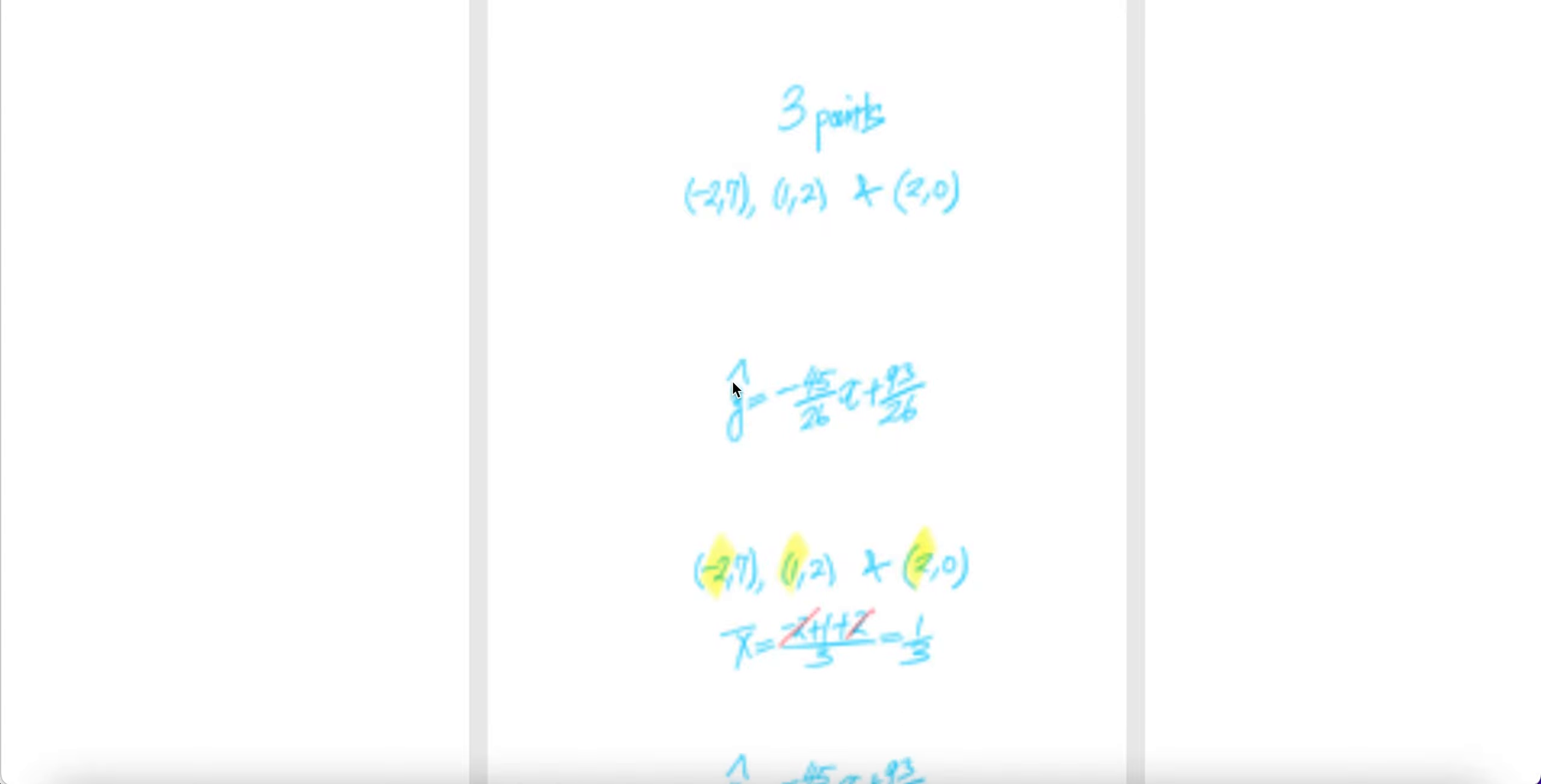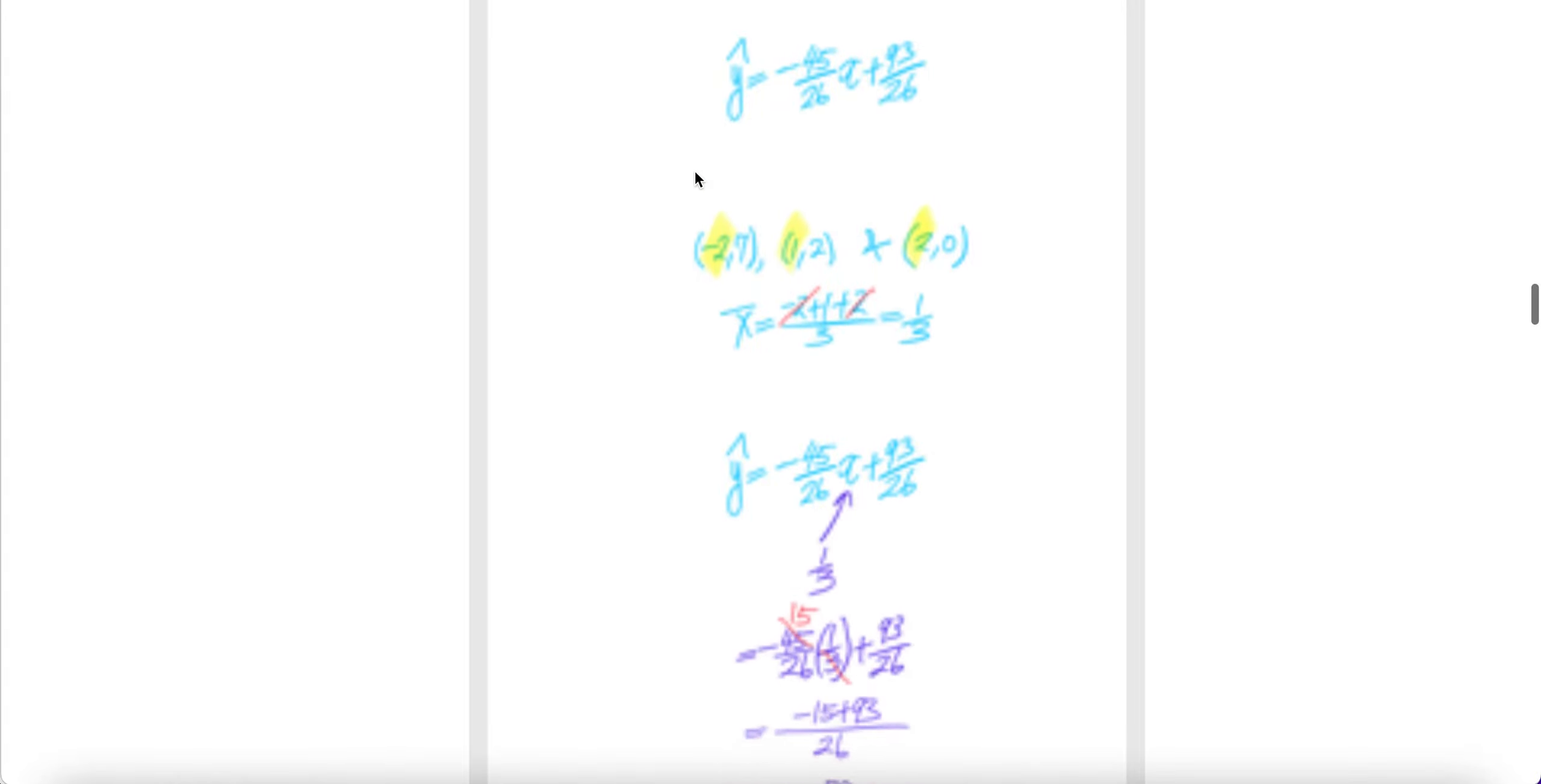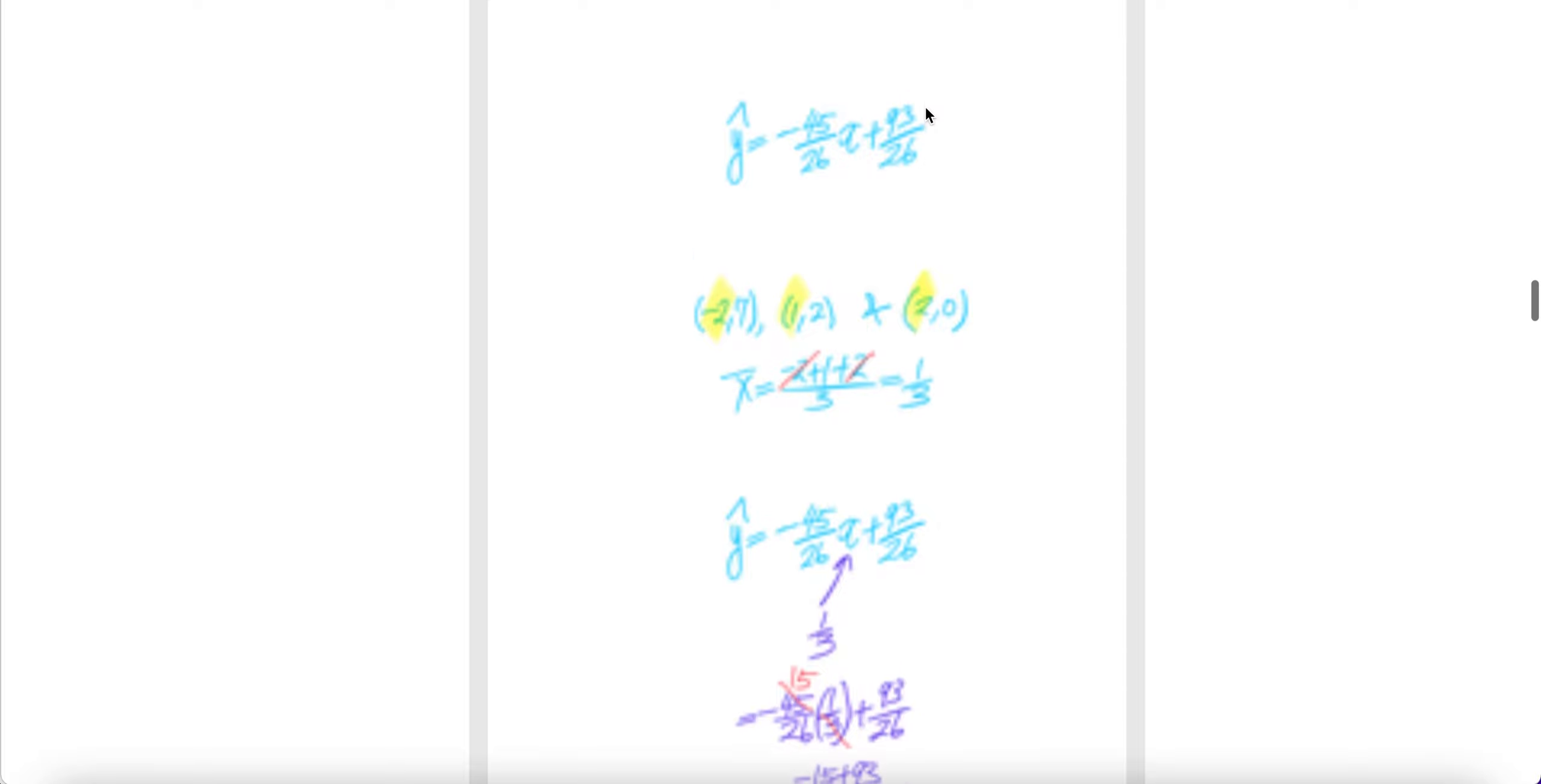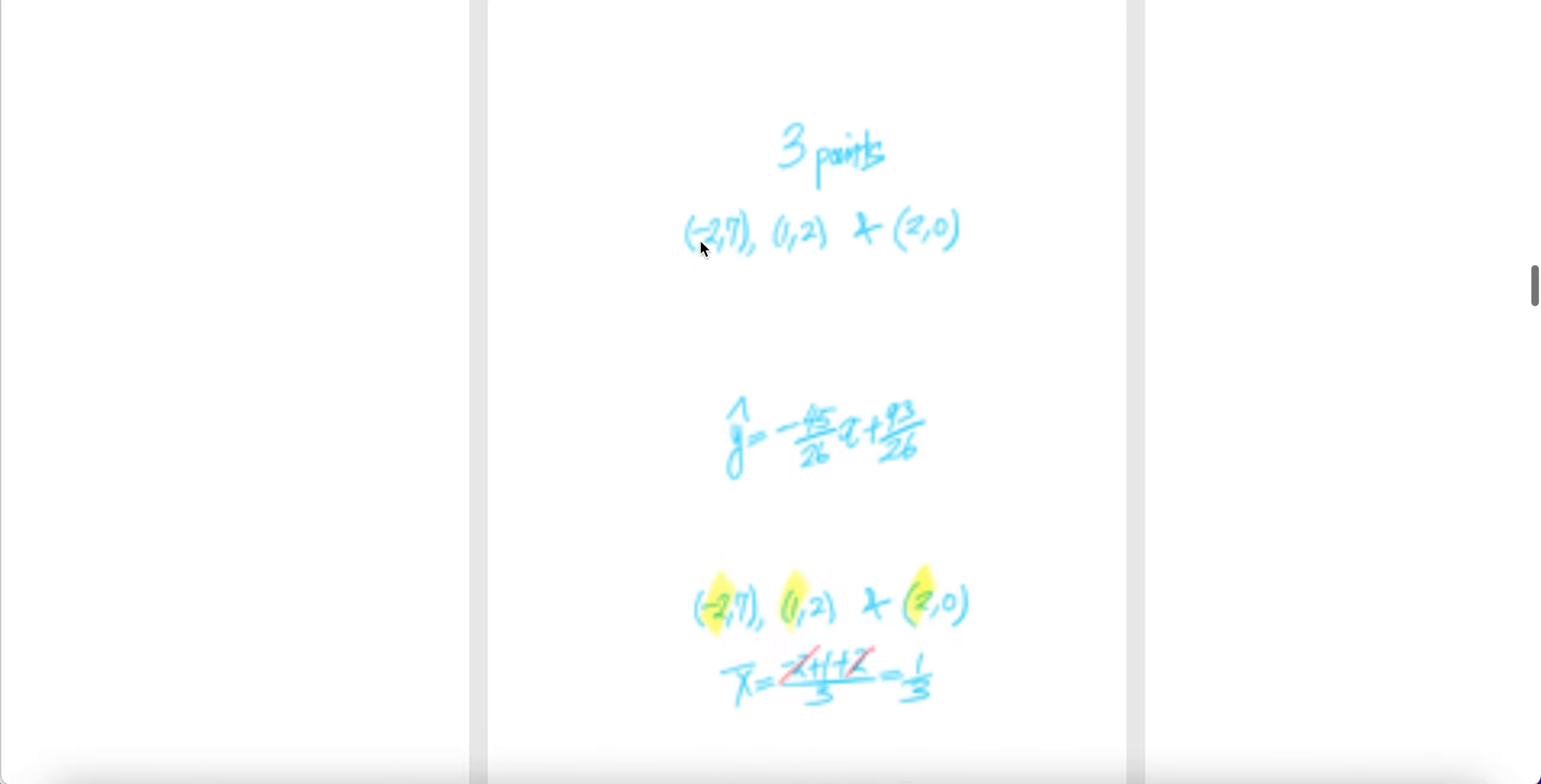And then from there, we get the estimate for the slope, minus 45 over 26, and the estimate for the y-intercept is 93 over 26. So this is the estimated line that goes through minus 2 comma 7, 1 comma 2, 2 comma 0.